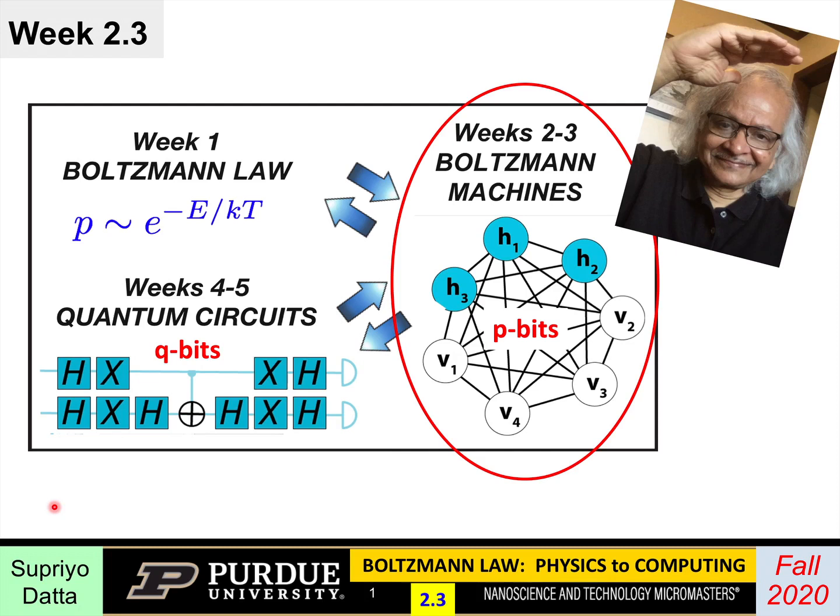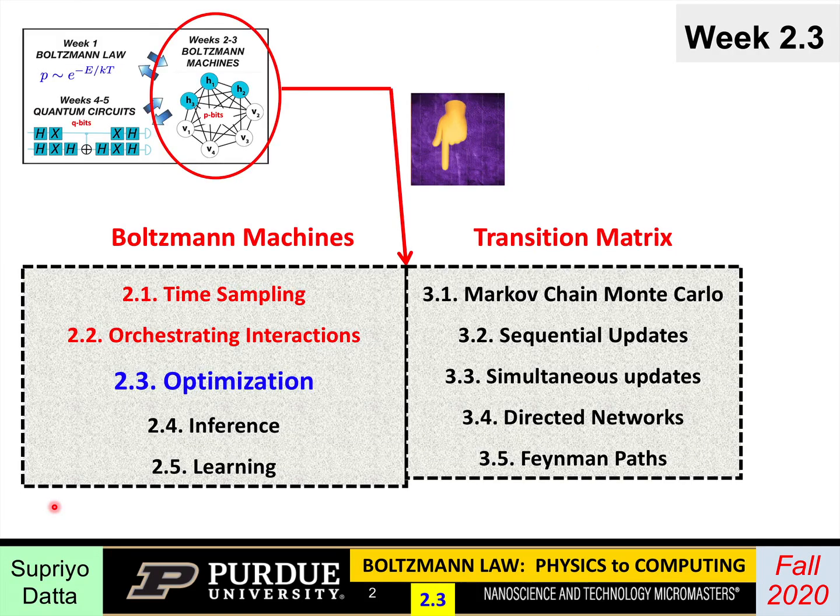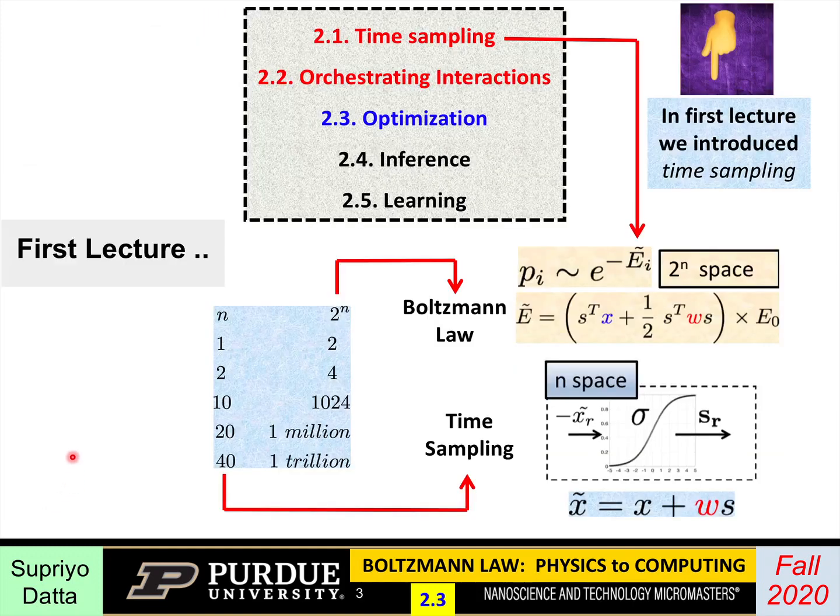Welcome back to week two of Boltzmann Law, Physics to Computing. This is the third lecture of this week. In the first lecture we introduced this time sampling method, this idea that the probabilities are driven by this Boltzmann Law, but that's in this 2 to the n space. A very practical way of calculating these distributions is to use the time sampling method which operates in the n space.